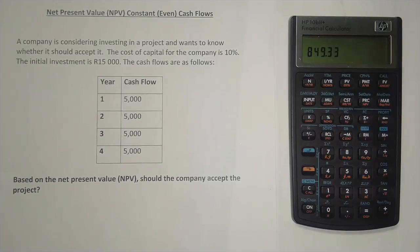Finally, deduct the initial investment of 15,000 rand: press minus 15,000 then equals, and you get the exact same net present value — 849 rand 33 cents. I prefer the first method, but you can use whichever one you're comfortable with. I hope it has made sense and you have gained value. If so, press the subscribe button, like this video, and share it with those you think it might help. Till next time, cheers.